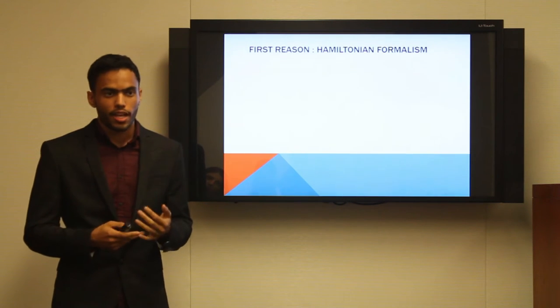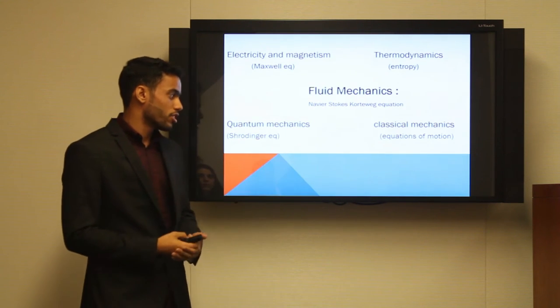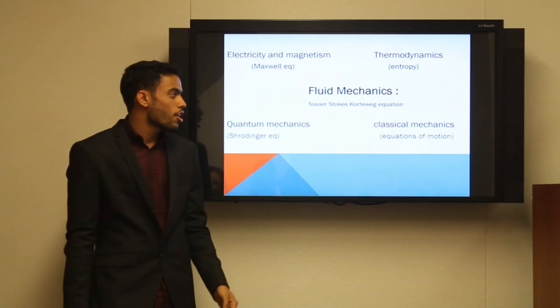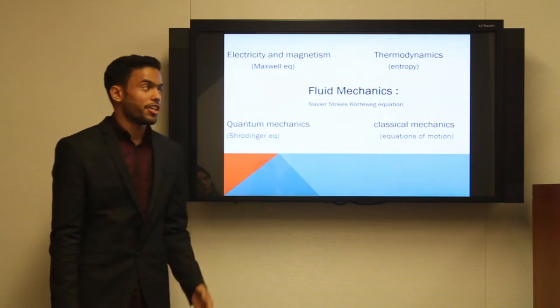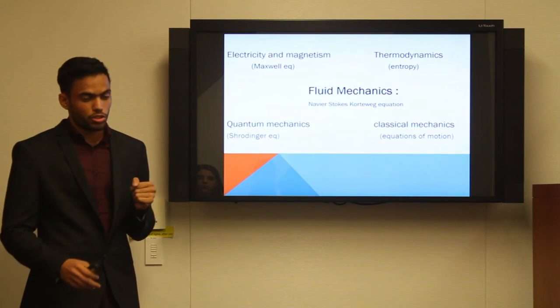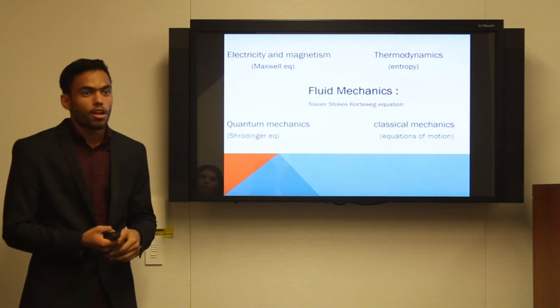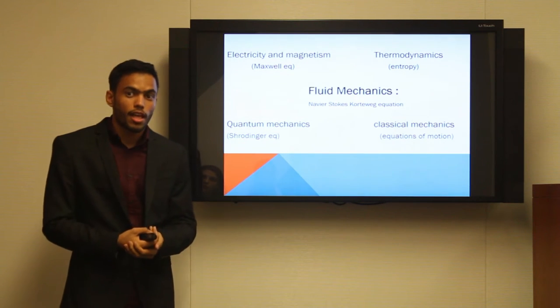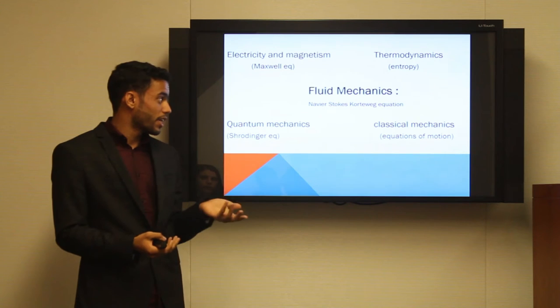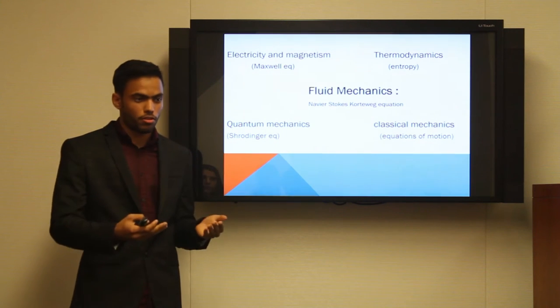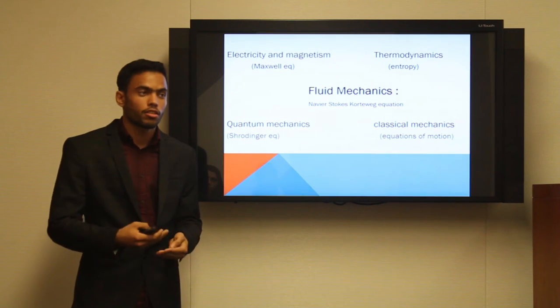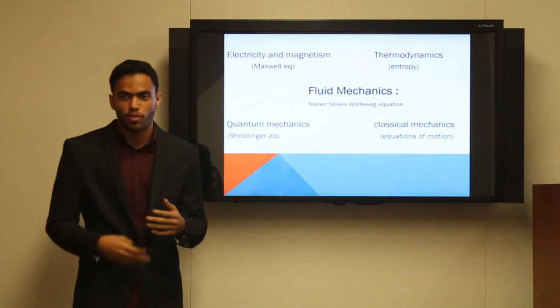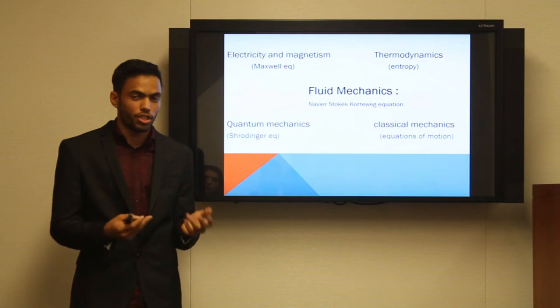An example of doing that is in classical mechanics, if you would write down the appropriate action, you would end up with the equations of motion. In the case of electromagnetism, you would get Maxwell equations. If you have quantum mechanics, you would end up with Schrodinger equation. And in our particular case of fluid mechanics, if you were to write down the appropriate action, you would have Navier-Stokes-Korteweg equation, which gives you somehow a feeling of how fundamental that model is.